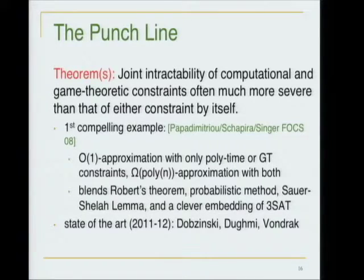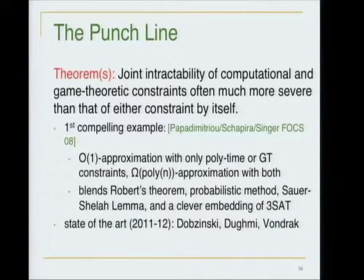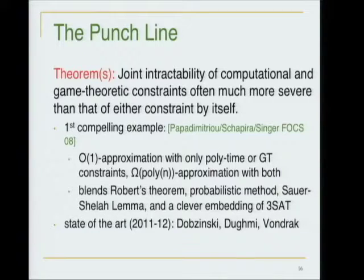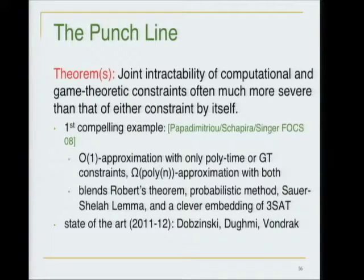The proof is really nice — it blends techniques from different areas. It uses Roberts' theorem from economics (truthful mechanisms can only look like a very special form), uses the probabilistic method to argue the range of the mechanism must be large if it achieves a good approximation, uses the Sauer-Shelah lemma to argue a large range implies a large complete subset with hypercube-like structure, then embeds 3-SAT problems to give the hardness result. Recent extensions by subsets of Dobzinski, Dughmi, and Vondrák extend to the randomized case and to combinatorial auctions, with proofs using error-correcting codes inspired by PCP constructions.